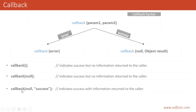If we call the callback with the first parameter as null and the second parameter as a string or object, it indicates success and the information is returned to the caller. If you provide an object as the second parameter, the stringified version of that object will be returned to the user.